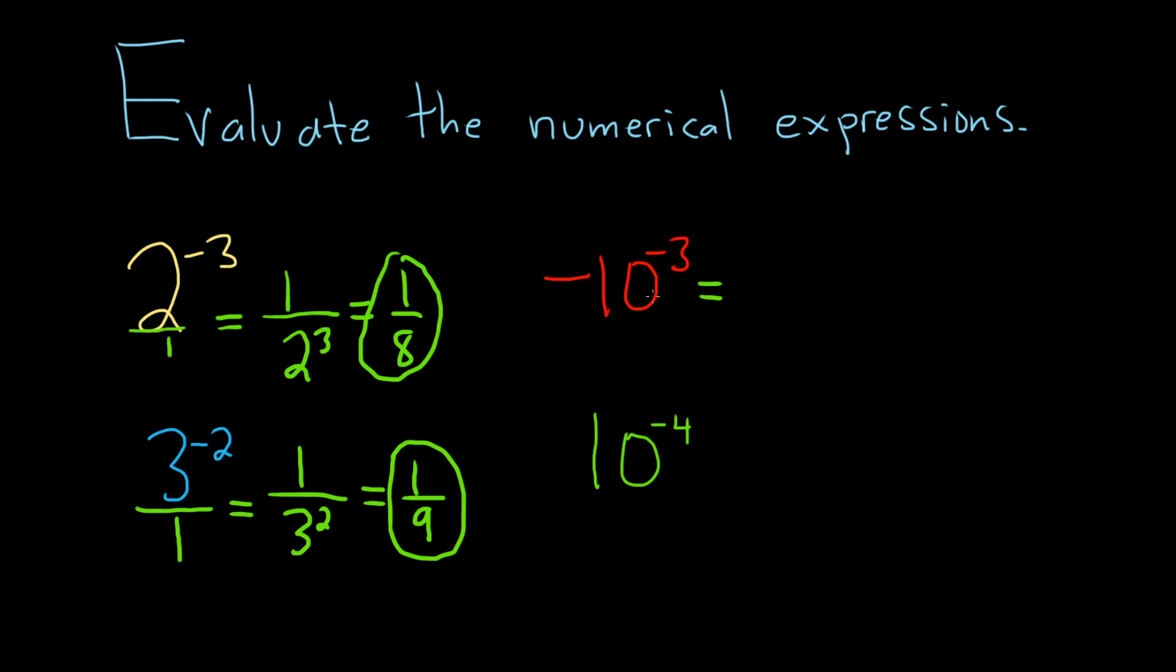Here we have negative 10 to the negative 3. So this time when we move the 10 downstairs, we'll have a negative 1 upstairs. We can leave that up there and we have 10 cubed. And so 10 cubed is a really big number because 10 squared is 100 and 10 cubed is 10 times 10 times 10. So 10 times 100 is 1,000.